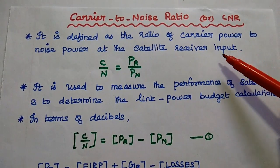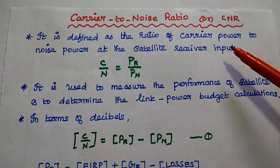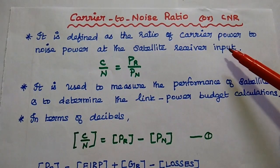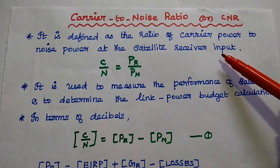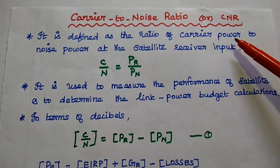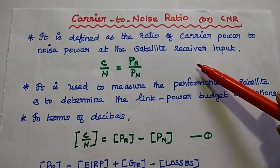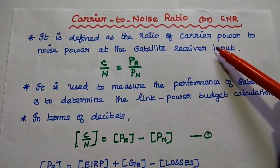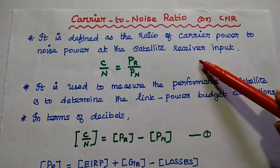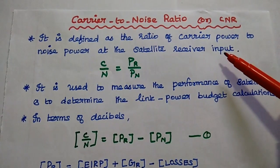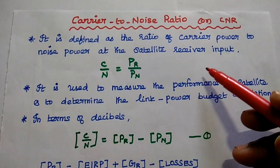Dear students, now we are going to discuss carrier to noise ratio and combined uplink and downlink C/N ratio. Let's start with the definition of carrier to noise ratio. It is also called as CNR. It is defined as the ratio of carrier power to the noise power at the satellite receiver input. Here we are going to consider the satellite receiver input side.